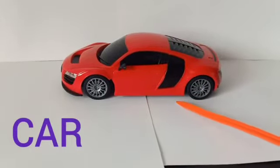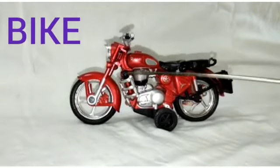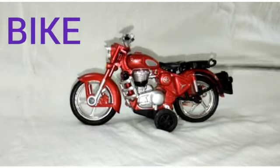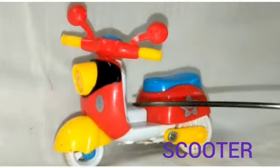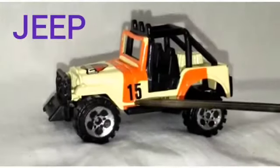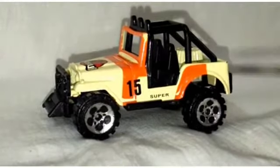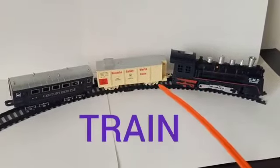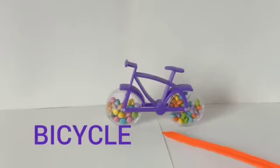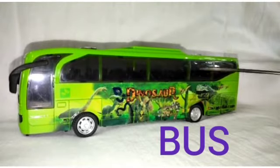This is a car. This is a bike. This is a scooter. This is a jeep. This is a train. This is a bicycle. This is a bus.